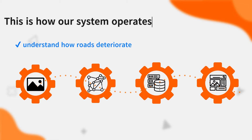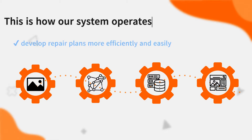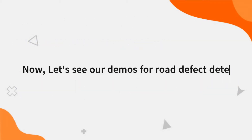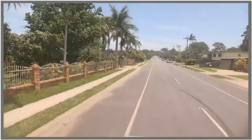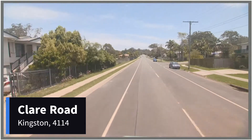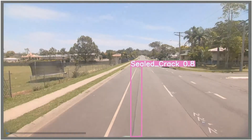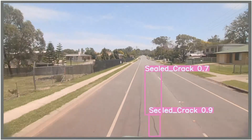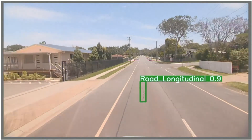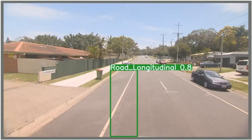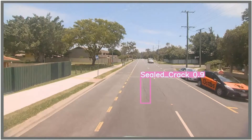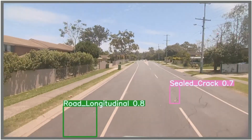This system provides a responsive and intuitive approach for users to better understand how roads deteriorate, hence allowing repair plans to be developed more efficiently and easily. Additionally, the information can be accessed on an iPad for flexible on-site use.